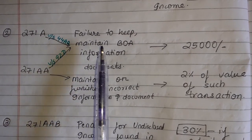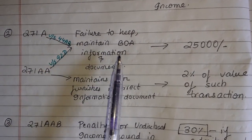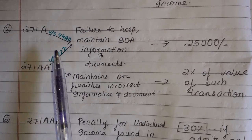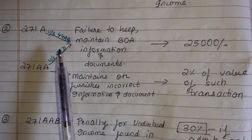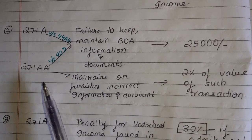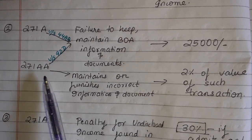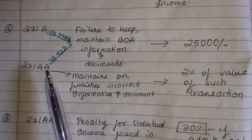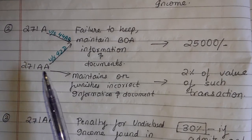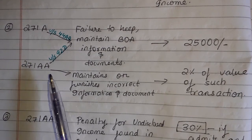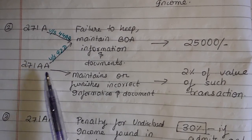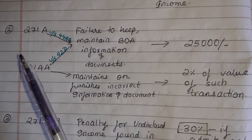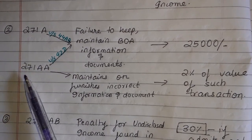Let's clarify: 271A refers to failure to keep and maintain books of accounts under section 44AA, which we read in PGBP. And 271AA is under section 92D, which is for transfer pricing and international transactions — it relates to books of accounts for those transactions. So the single A (271A) is for section 44AA under PGBP, and the double A (271AA) is for 92D under transfer pricing.